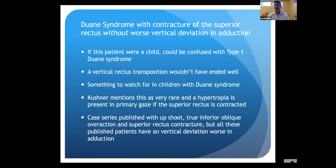But in this particular patient, a vertical rectus transposition clearly wouldn't have ended well. We probably would have ended up with some bizarre vertical deviations afterwards. So it's something to watch for in children with Duane syndrome. Children are notoriously difficult to examine, and finding these sorts of subtle variants might be difficult. One child was referred to me in that situation 15 years ago after a vertical rectus transposition for Duane syndrome with a terrible hypertropia. That child did okay in the end after an additional four surgeries.